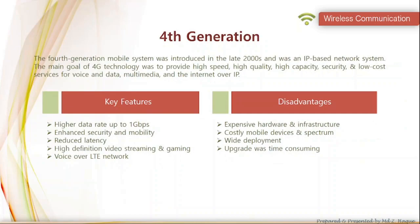The fourth generation mobile system was an IP based network system. The main goal of 4G technology was to provide high speed, quality capability, and security, multimedia internet over IP, and low cost services for voice and data. Key features included higher data rate, enhanced security and mobility, high definition video streaming and gaming, reduced latency, and voice over LTE network. Disadvantages were expensive hardware and infrastructure, costly mobile devices and spectrum, wide deployment challenges, and time-consuming upgrades.